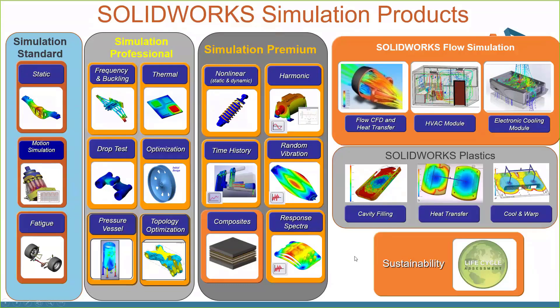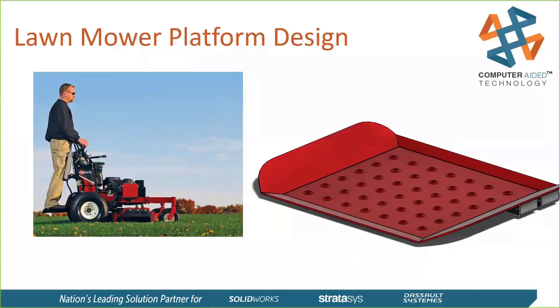Let's get introduced to the case study we're going to deal with today. Simulation is the key tool for design validation. In this particular case, we're going to look at a lawnmower platform — a gentleman is standing on this platform on a riding lawnmower. We need to make sure this platform meets a few different criteria. Whenever you have a human interface part like this, you want to make sure the product is safe. We don't want anyone getting hurt by our designs. Secondly, we want to make sure this product is comfortable — if somebody is going to be riding this for hours at a time, we want to make sure it won't cause excessive fatigue or excessive vibrations.